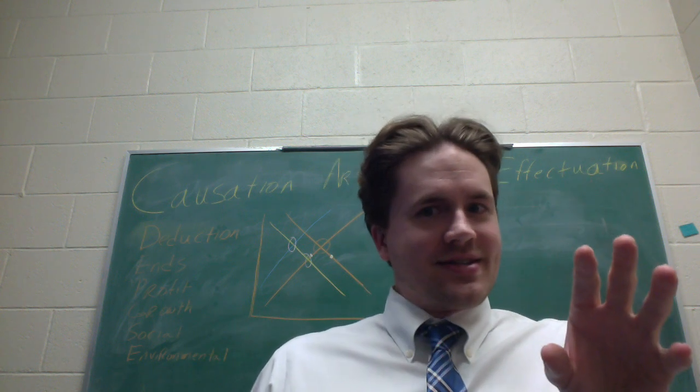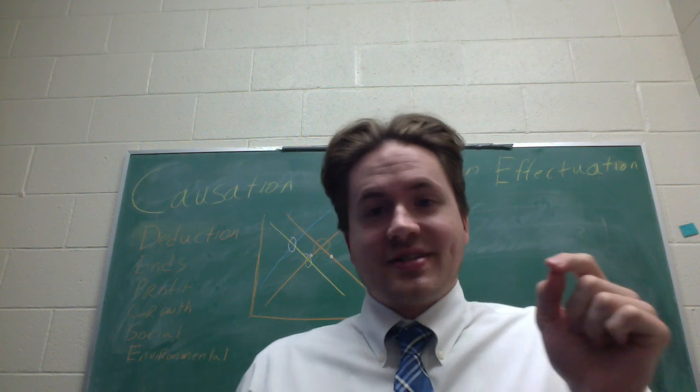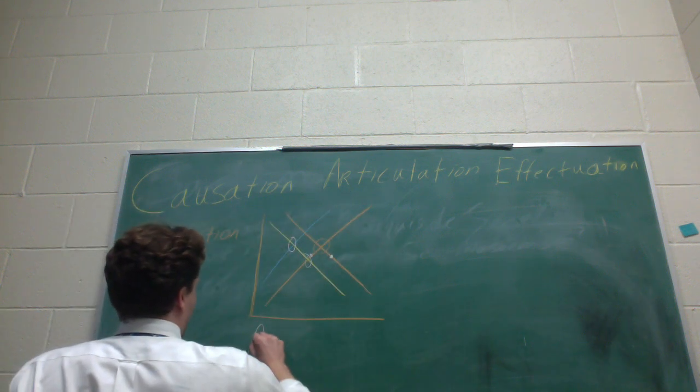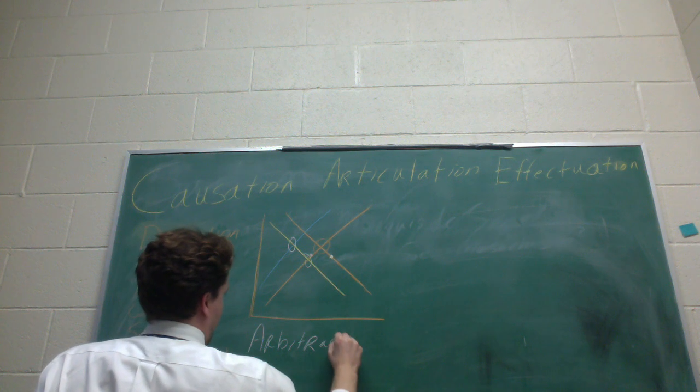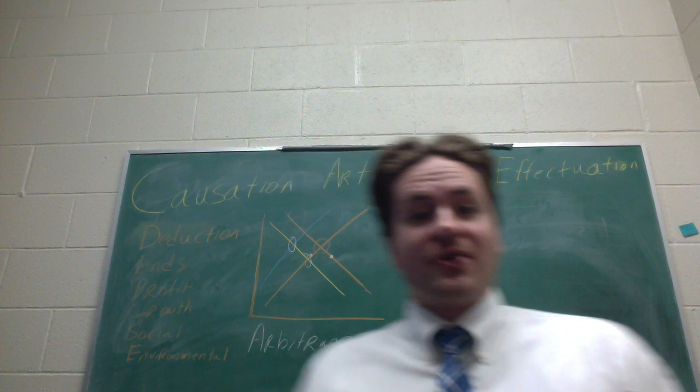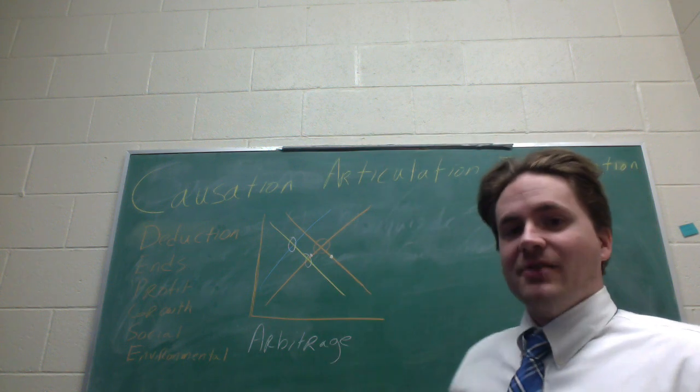Then we get a liquor license, and we sell it at an elevated price. Well, this is essentially what you call arbitrage. In other words, you perceive an imbalance in the market, and you make a profit from it.